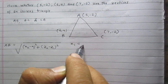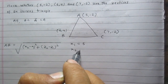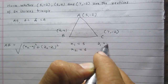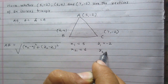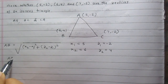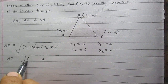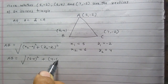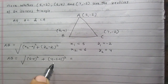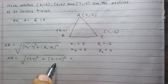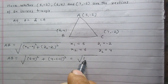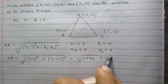For distance AB: x1 = 5, x2 = 6, y1 = -2, y2 = 4. Substituting into the distance formula gives AB = √((6-5)² + (4-(-2))²) = √(1² + 6²) = √(1 + 36) = √37.